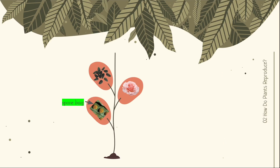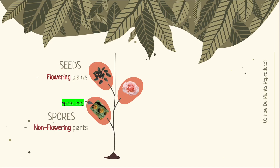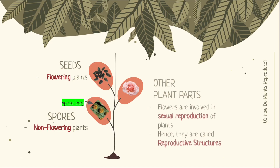Plants reproduce through seeds for flowering plants, spores for non-flowering plants, and with the help of other parts of the plants. Flowers are involved in sexual reproduction of plants, meaning they are called reproductive structures. On a side note, flowering plants are plants that can develop flowers, while non-flowering plants do not develop flowers.